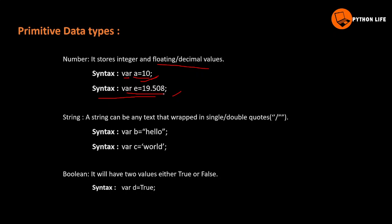A string can be any text wrapped in single or double quotes — for example, 'hello' or "hello". You can also use template literals. If we give data including special symbols and numbers within quotes, it is treated as a string. Boolean has two values: true or false.